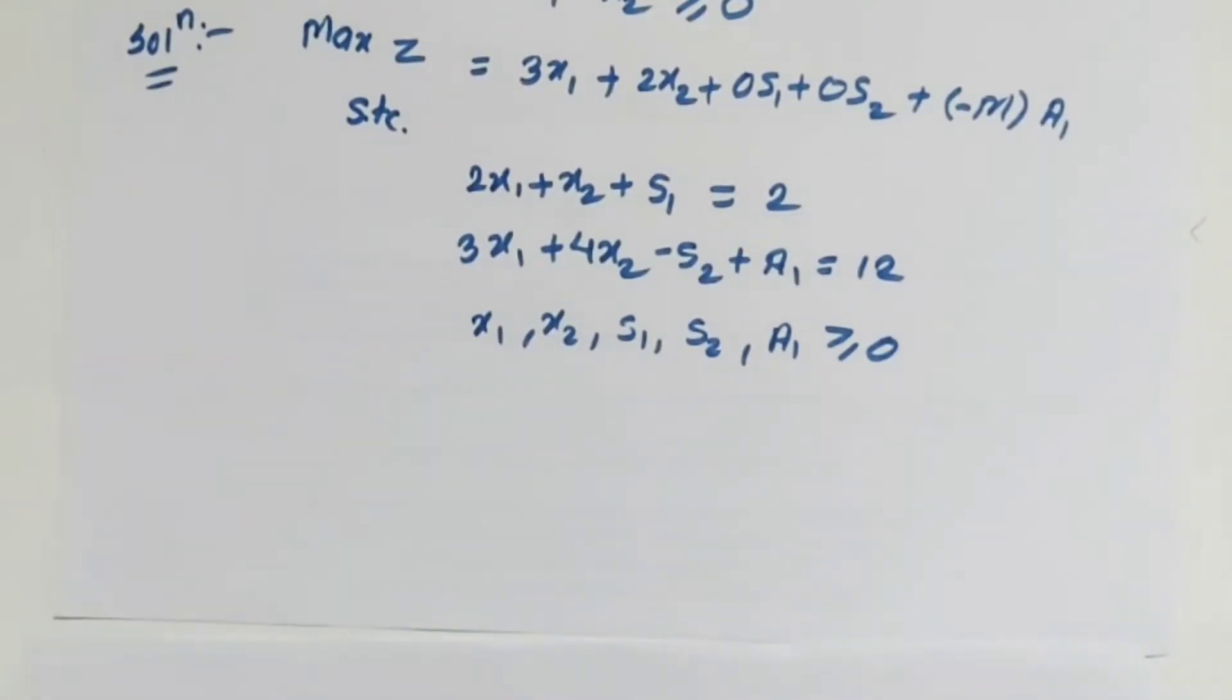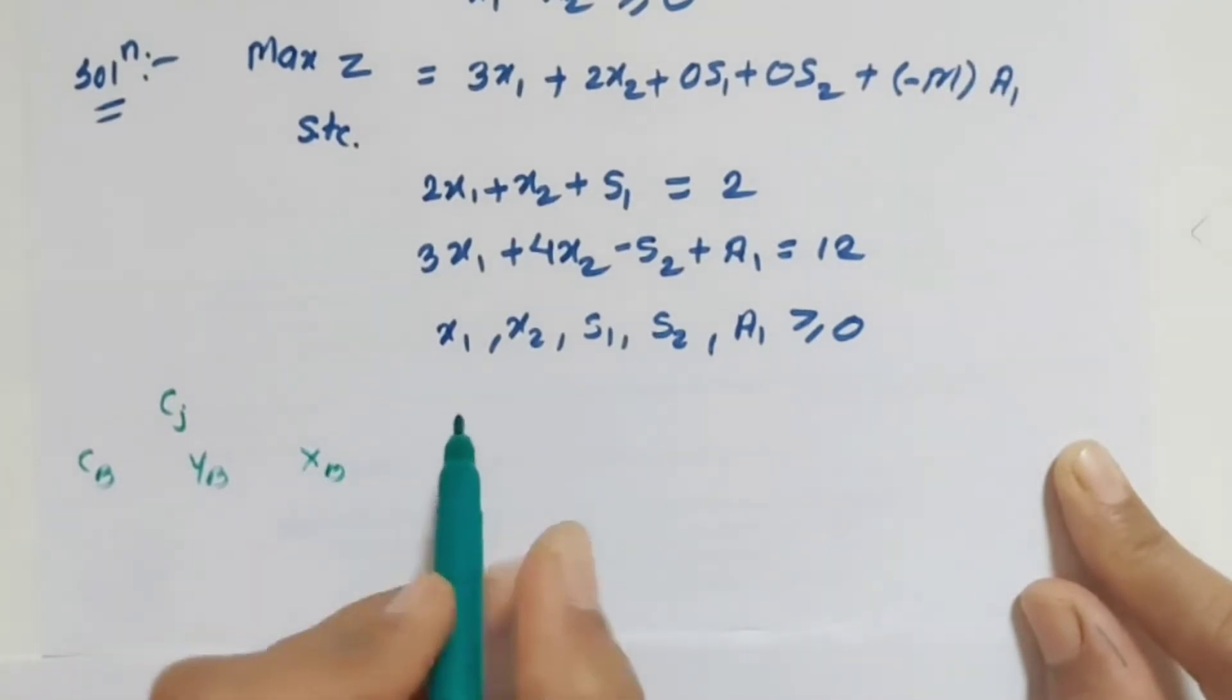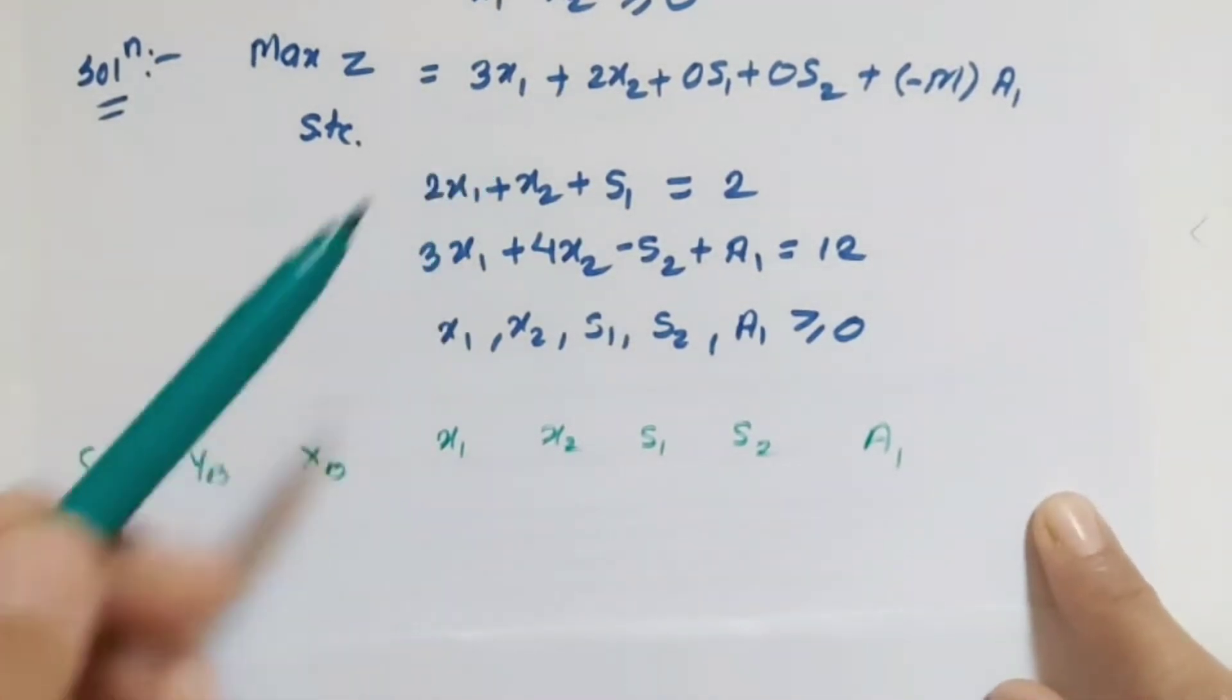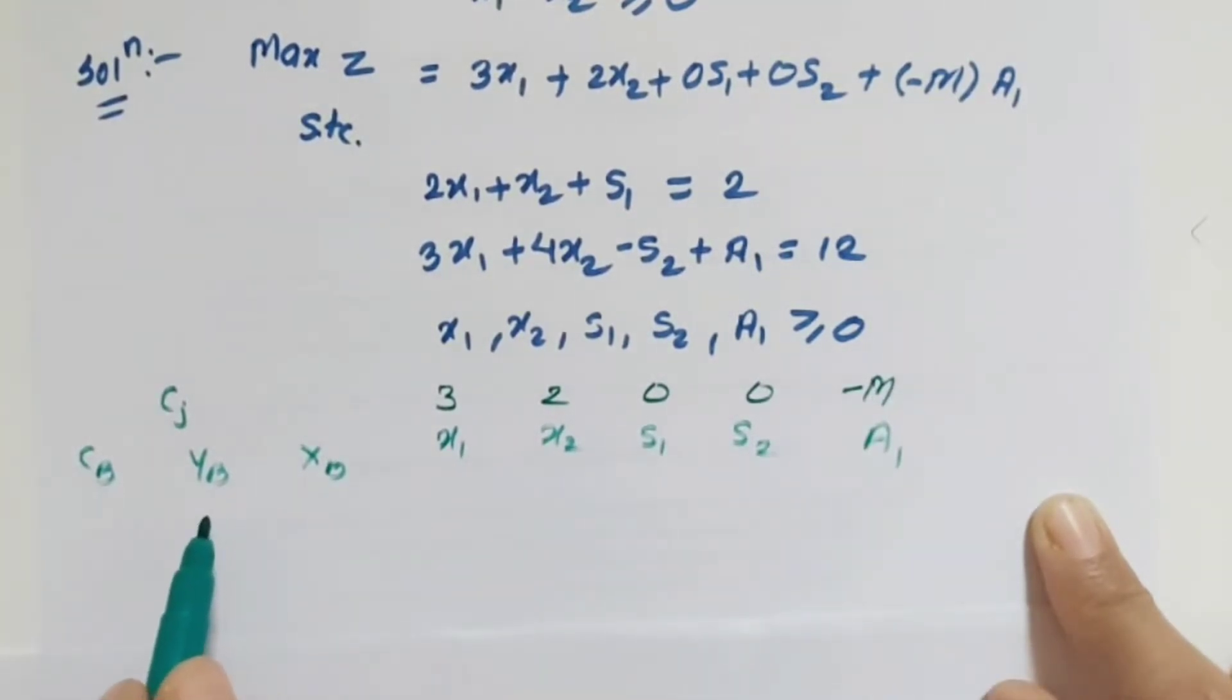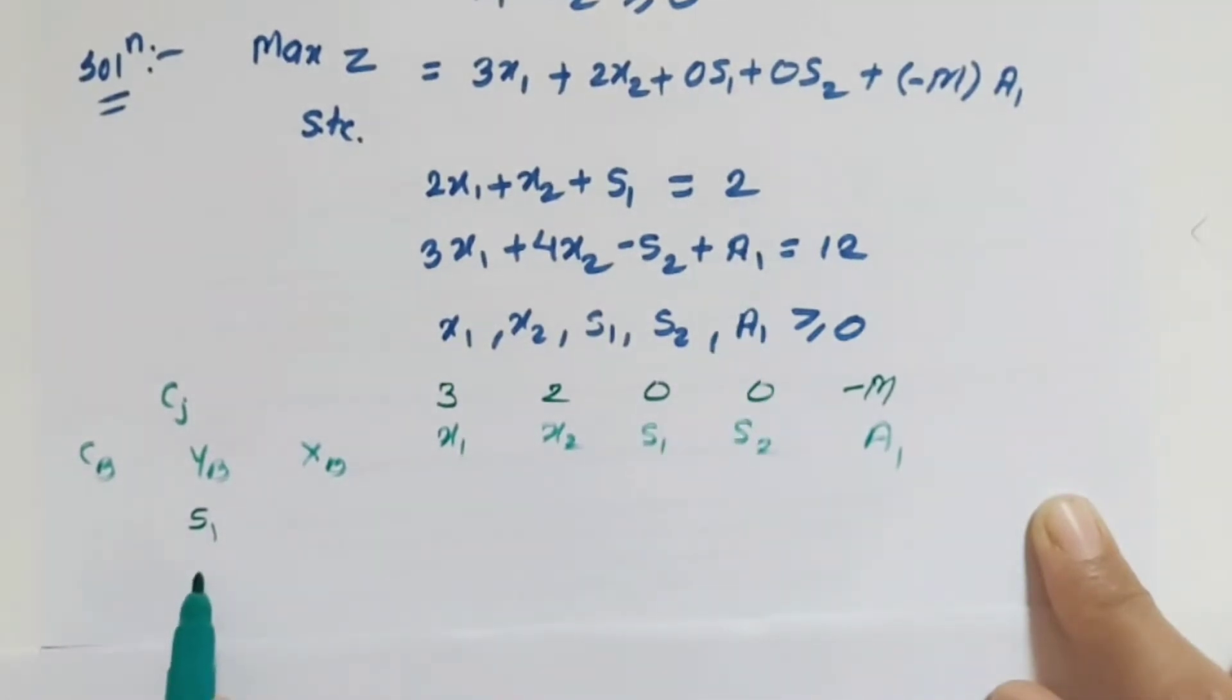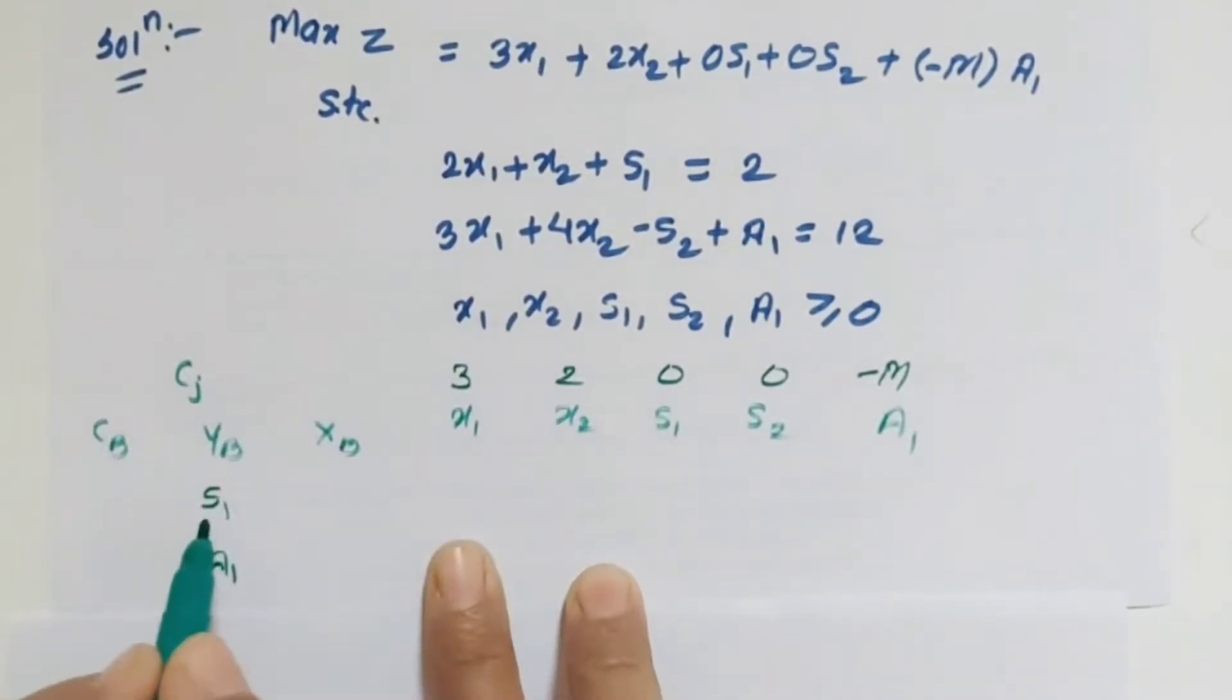Next is formulate the table. First cj row, therefore table has cj, cb, yb, xb, all variables. So we are using x1, x2, s1, s2, and artificial variable. There is corresponding cost, so cost is 3, 2, 0, 0, minus m. Then yb, so basic variables, and xb.